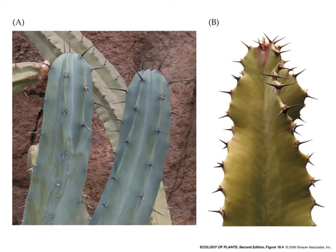Here's an example of that convergence. On the left, a cactus — typical of New World desert plants. On the right, a euphorbe in the poinsettia family. They look very similar in form despite being taxonomically unrelated.